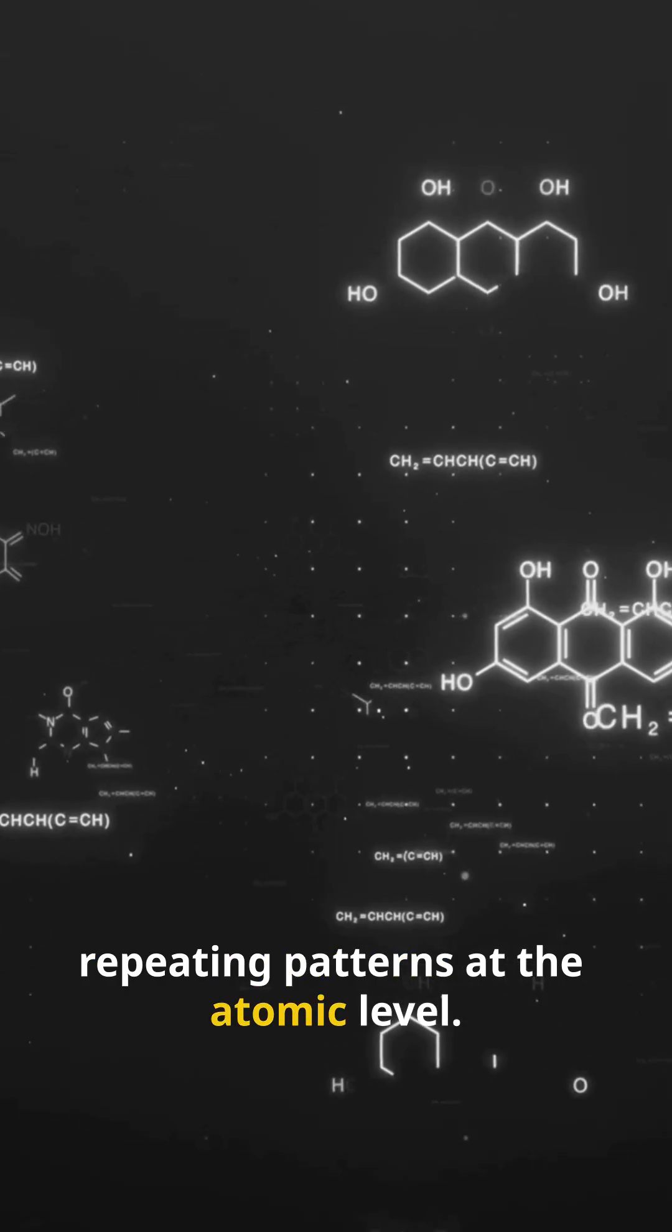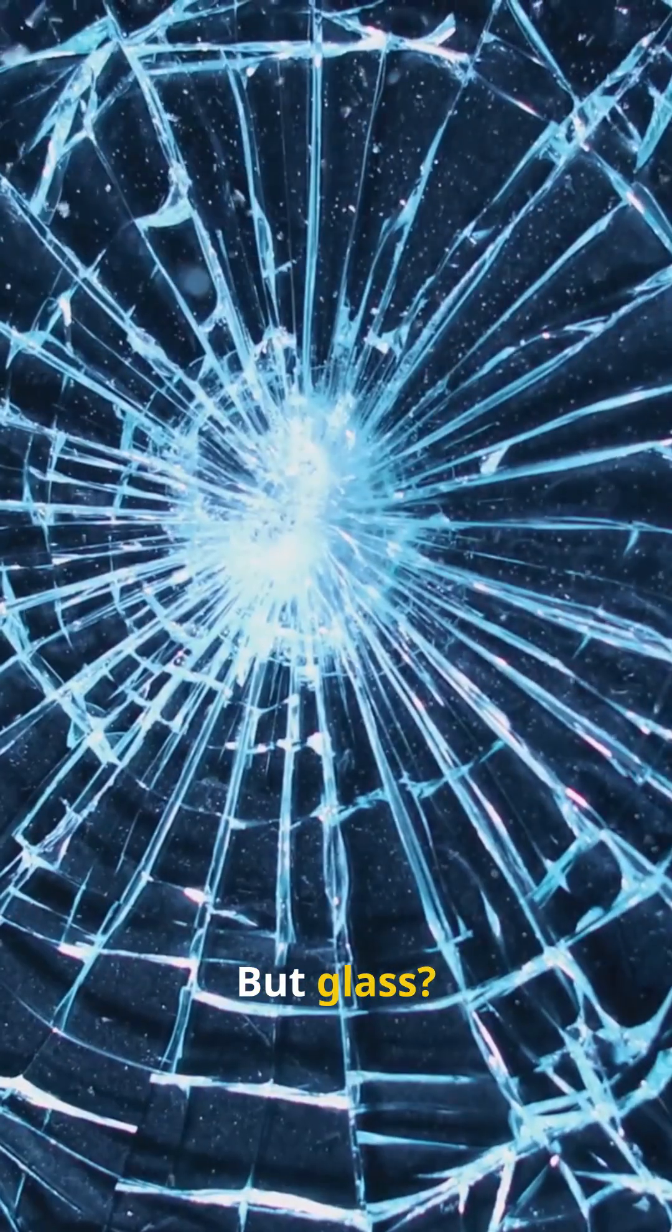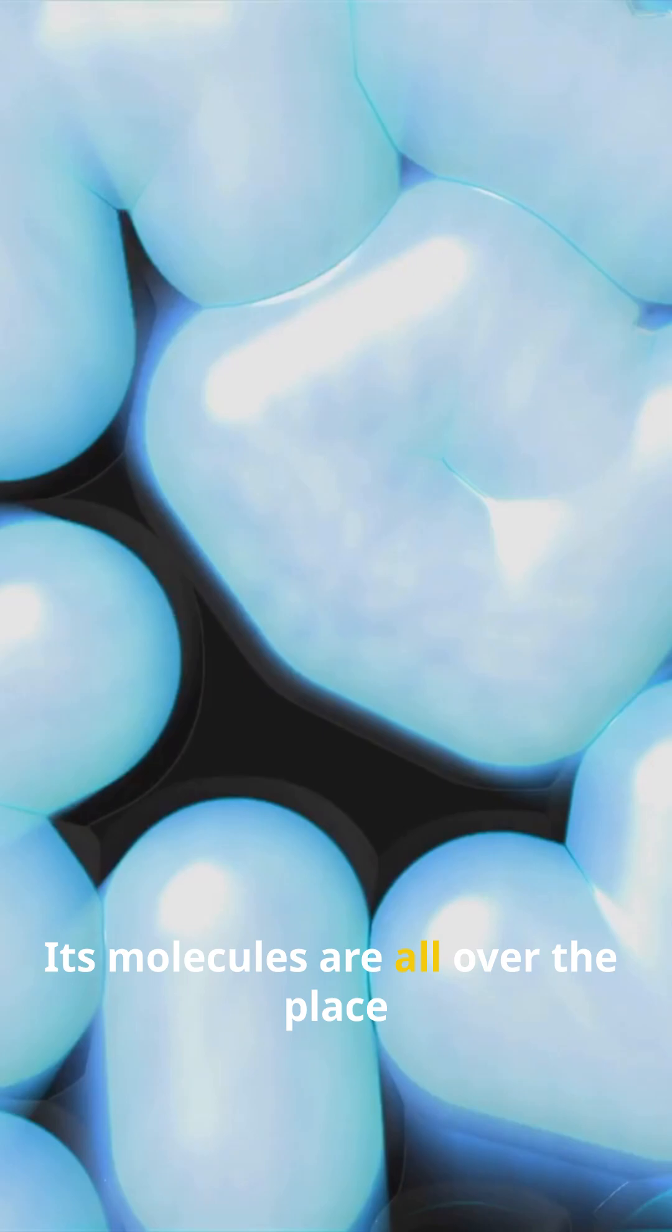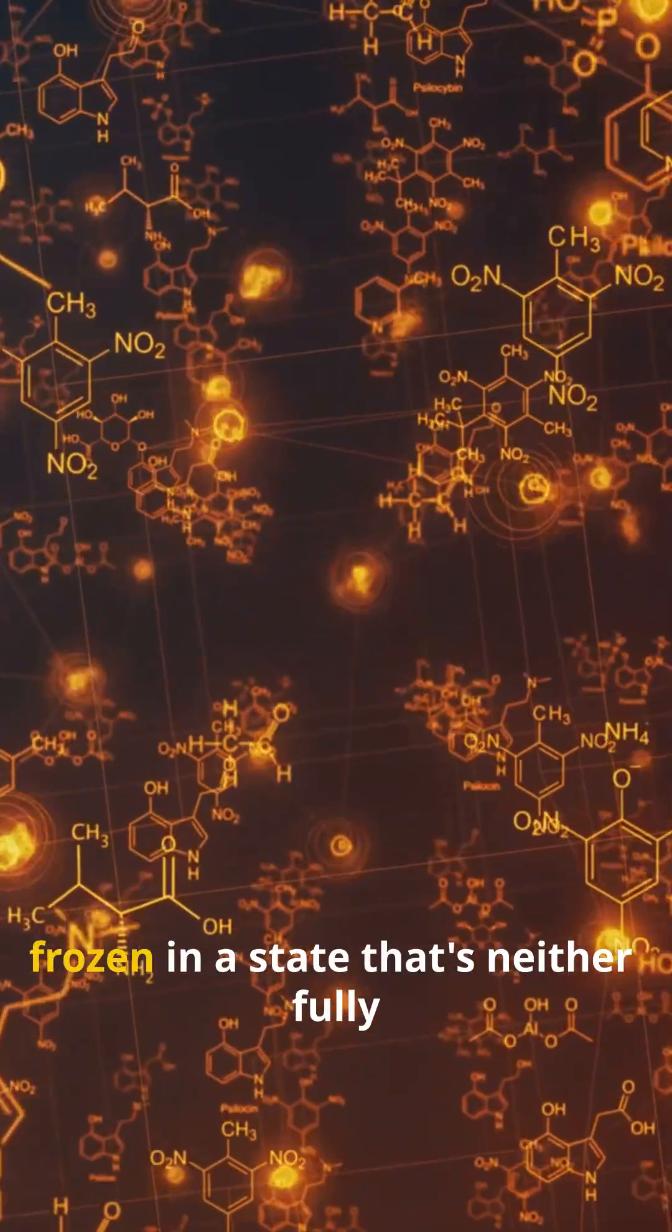Regular solids like ice or metal have neat repeating patterns at the atomic level. But glass? Nope. Its molecules are all over the place randomly scattered, frozen in a state that's neither fully liquid nor fully solid.